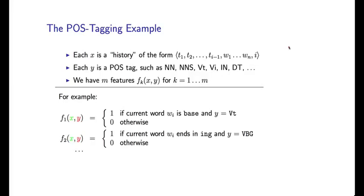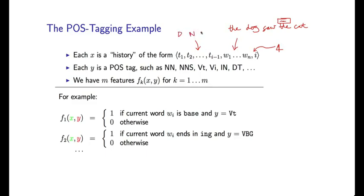Let's consider our second example problem, which was part-of-speech tagging. In this case, each x is a history which consists of a sentence — for example, 'the dog saw the cat' — along with some position i being tagged (say position 4), and a sequence of previous tags t1 through ti-1. So we might have d, n, v as the previous tags before this fourth position. Each x encapsulates all of this contextual information: the entire sentence, the previous sequence of tags, and the position we're actually tagging.